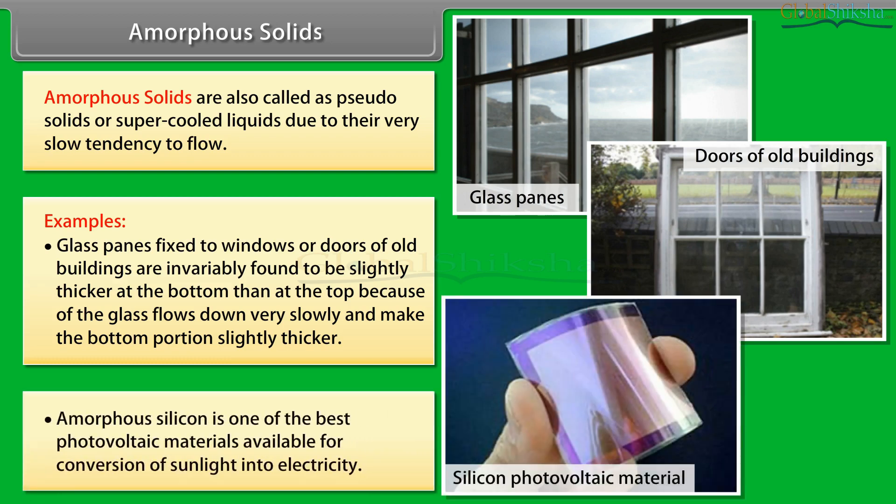Amorphous silicon is one of the best photovoltaic materials available for conversion of sunlight into electricity.